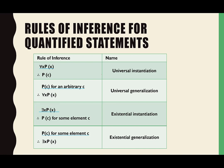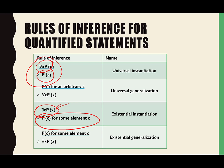Existential instantiation: if there exists some x where P(x) is true, then it's true for some specific element c — we can't just pick an arbitrary c, it is some specific element. And existential generalization: if P(c) is true for some specific c, then there exists some x where P(x) is true.